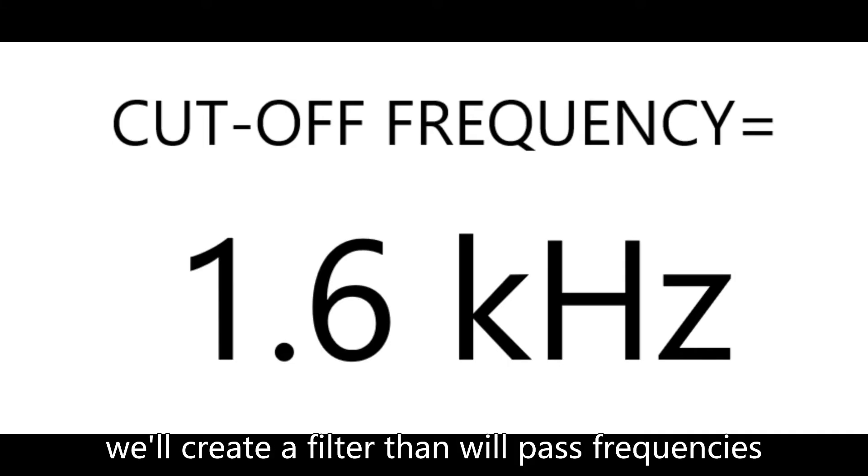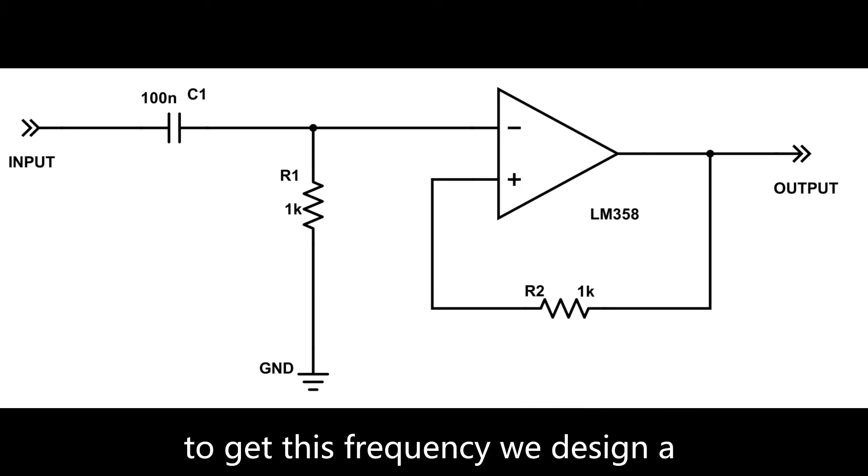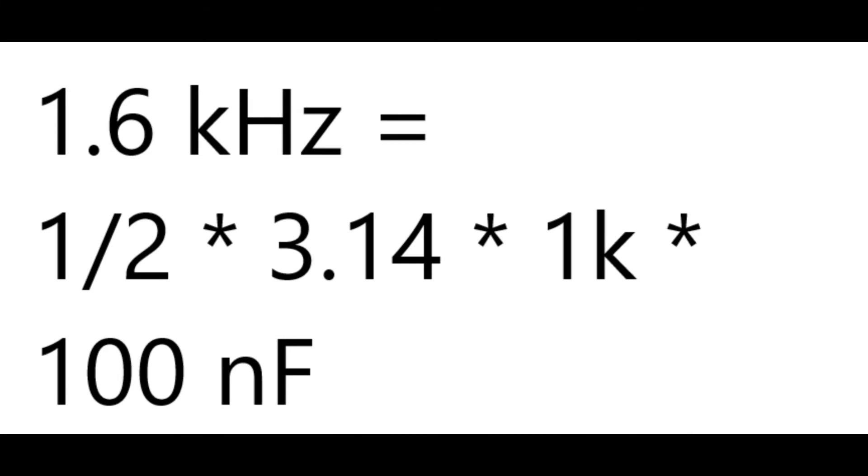We will create a filter that will pass frequencies that are above approximately 1.6 kHz. To get this frequency, we design a high pass RC filter using our formula and calculate the resistor to be 1 kOhm and a capacitor to be 100 nF.